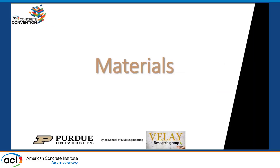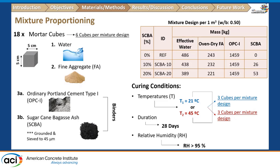For materials in this experimental campaign, we used mortar with three different mix designs: a reference with no replacement, 10% cement replacement with ash, and 20% replacement. The ash was ground and sieved to 45 micrometers for a more uniform and blended distribution. After casting, half of each mix design's specimens were cured at 21°C and the other half at 45°C for 28 days, all at a relative humidity of 95% or greater.